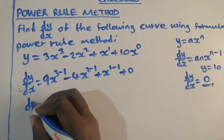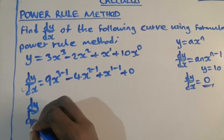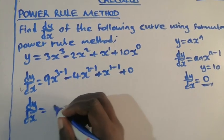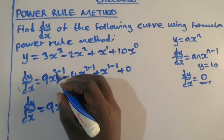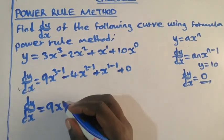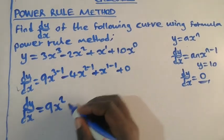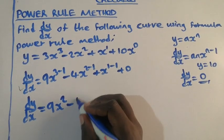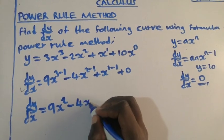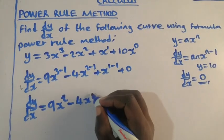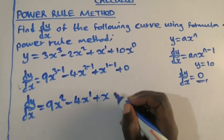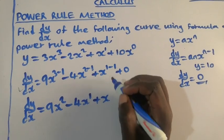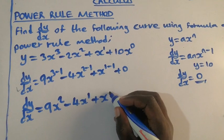So dy/dx will be equal to 9x to the power 3 - 1, which is 2, minus 4x to the power 2 - 1, which is 1, plus x, 1 - 1, which is 0.